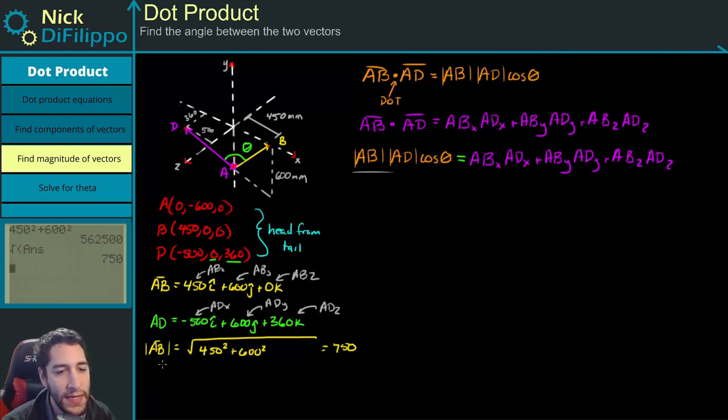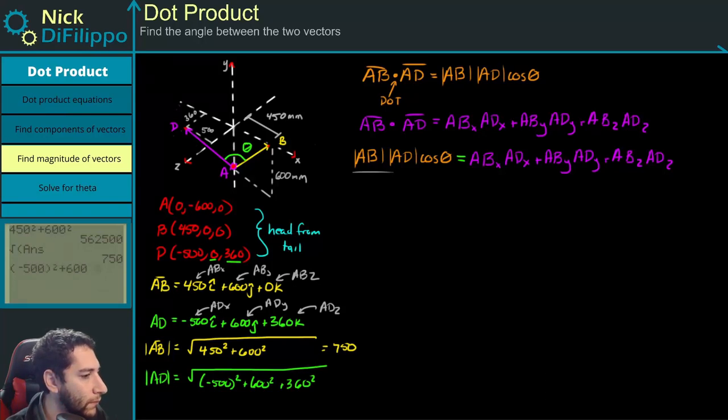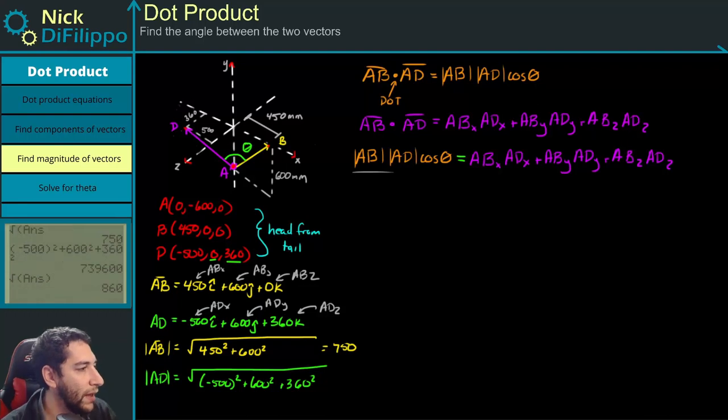We can do the same with AD. We take the magnitude of AD, and this is going to be equal to the square root of minus 500 squared plus 600 squared plus 360 squared. And this gives me a magnitude of 860.